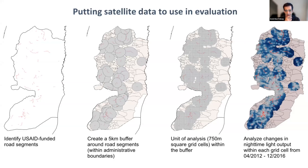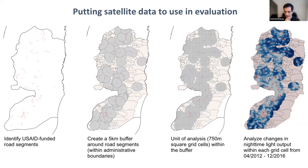Another example is from the West Bank in the Palestinian territories, where USAID had been funding a series of road improvements. On the left-hand side you can see the individual road segments that were funded and rolled out over time. We drew buffers around those individual road segments — some buffers overlap because those segments are very close together and feed into similar main arterial routes. Our units of analysis were individual nighttime lights grid cells, with 750-meter square resolution. We then analyzed the change in nighttime lights output over a four-year window when these roads were improved, tracing out the causal impact of road improvements on nighttime lights.